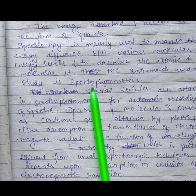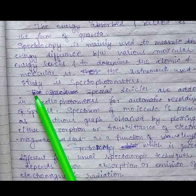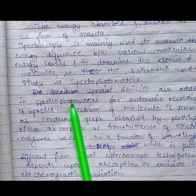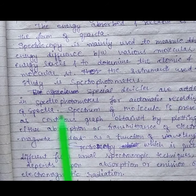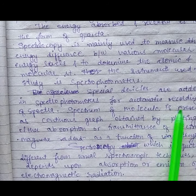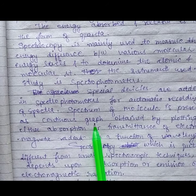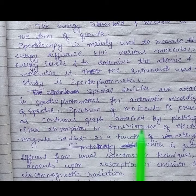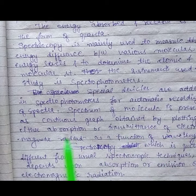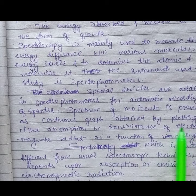Special devices are added in spectrophotometer for automatic recording of spectra. Spectrum of molecule is presented as a continuous graph which is obtained by plotting either absorption or transmittance of electromagnetic radiation as a function of wavelength.